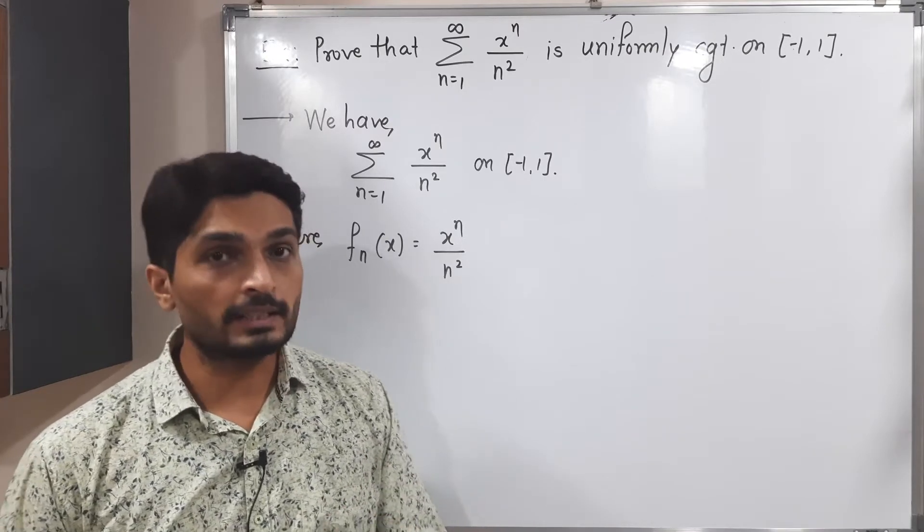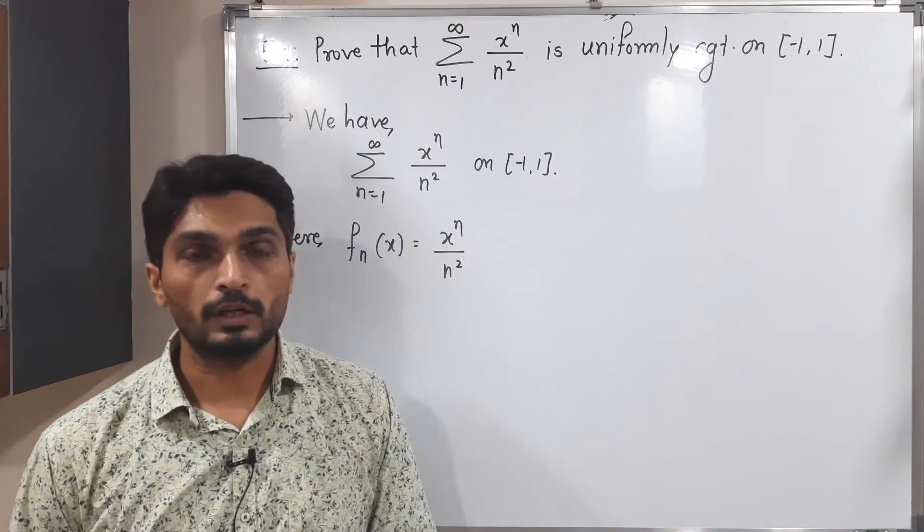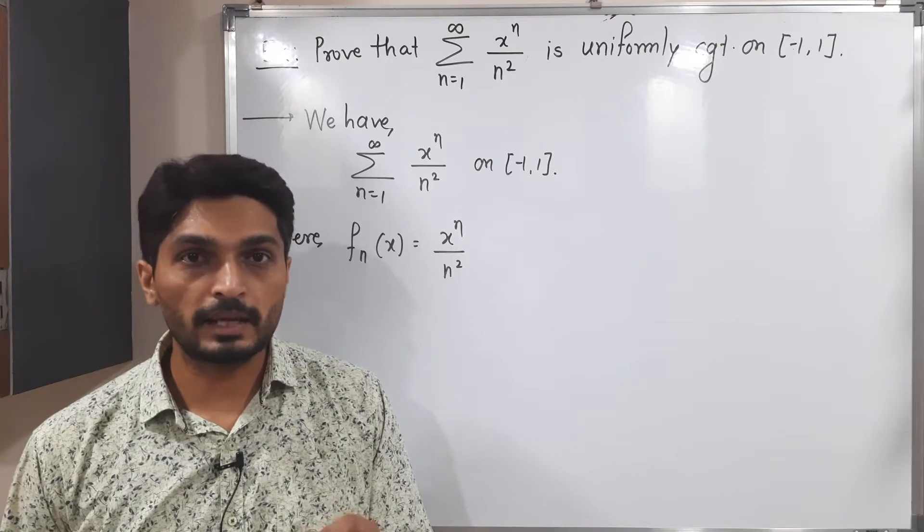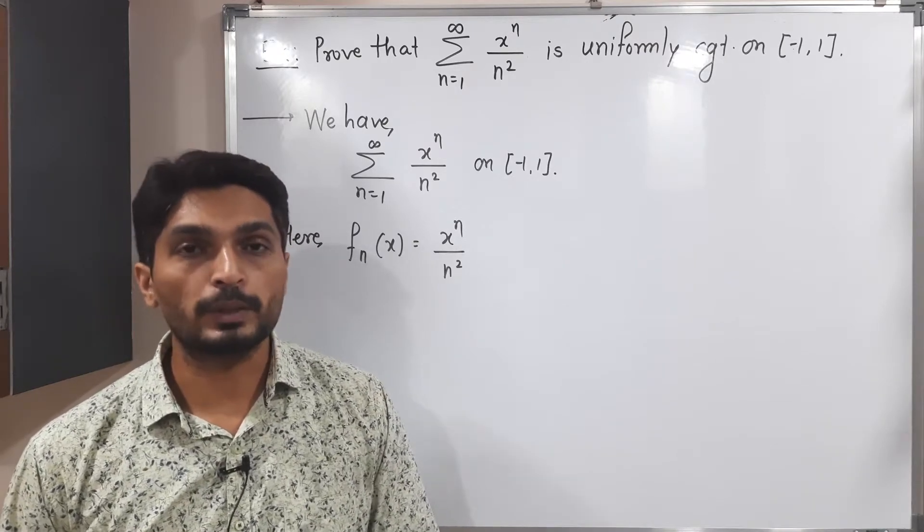I have written the given series of functions and fn here is x raised to n upon n square. With the help of Weierstrass M-test, I'm going to prove it converges uniformly on interval minus one to one.